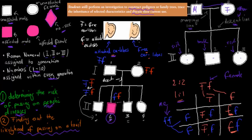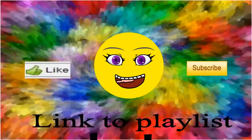What you need to be able to do is know what these symbols are, know how to construct a pedigree tree — don't forget the Roman numerals, the descent line, and the marriage line — and if questions ask what would happen if a person had a child with another person, you would use a Punnett square to find the likelihood of passing on a trait. I hope that was useful. Thank you for watching.